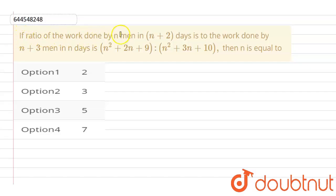If the ratio of work done by n men in n+2 days to work done by n+3 men in n days is (n²+2n+9)/(n²+3n+10), then n is equal to.